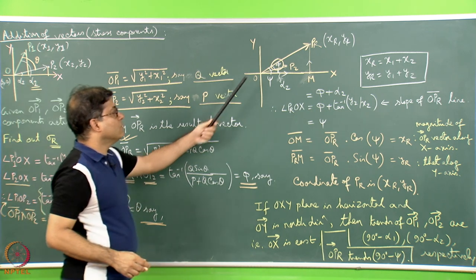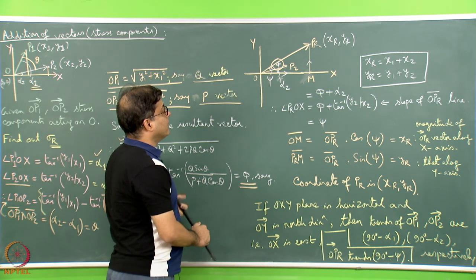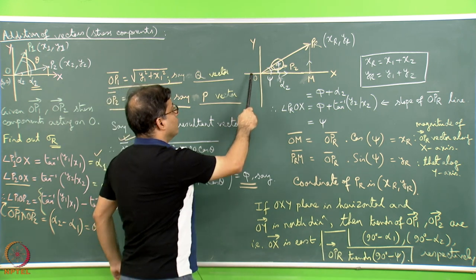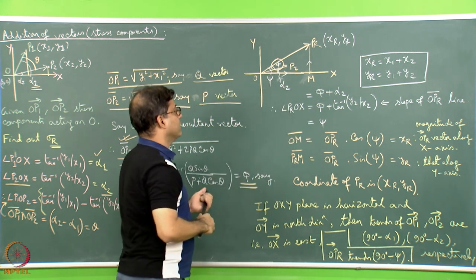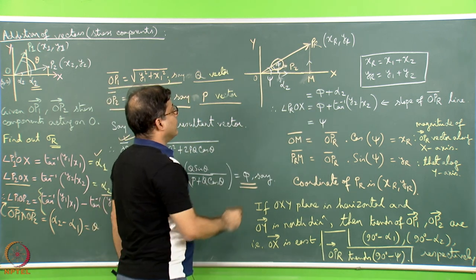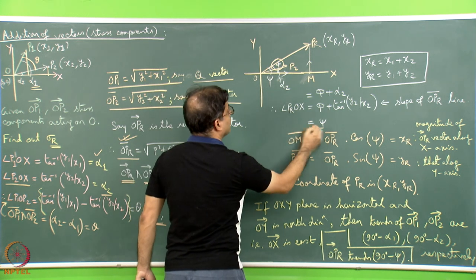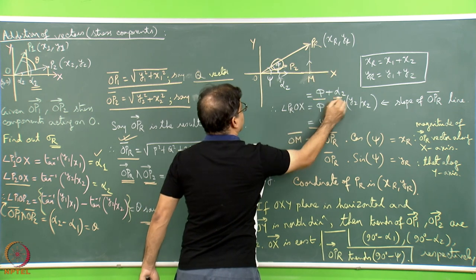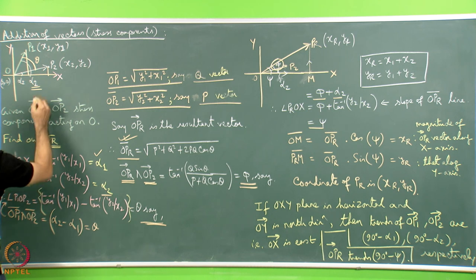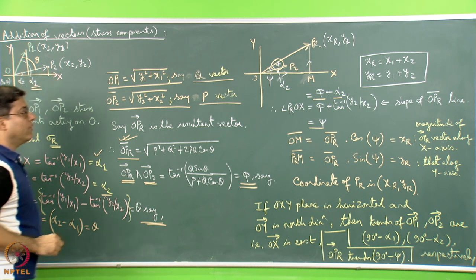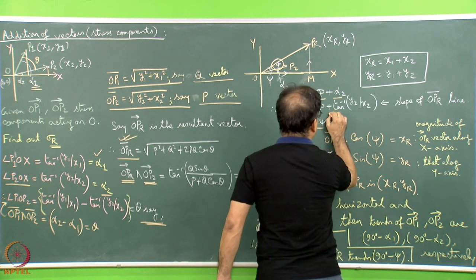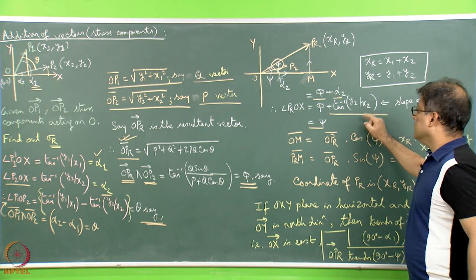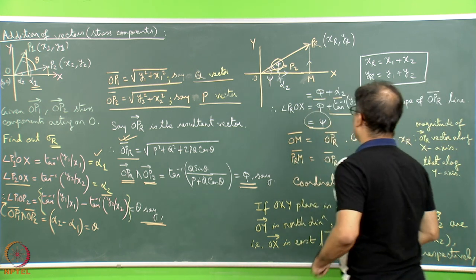Getting phi alone is not going to help us; we basically need to find out the angle psi — the slope of the OPr line on the Ox axis. We can write that psi, which is the angle PrOx, equals phi plus alpha2. Just to recollect, the angle P2Ox is alpha2, which is tan inverse of y2 divided by x2. In this way the magnitude of psi can be obtained.